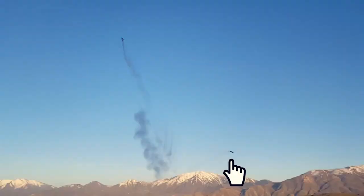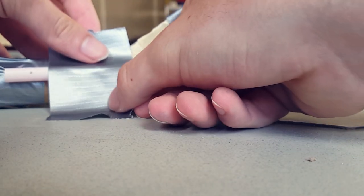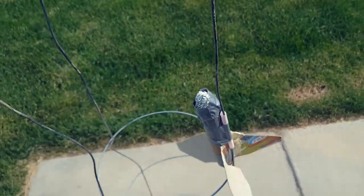Otherwise, it might fly out. Now, all you have to do is tape a straw onto your rocket and slide it onto some sort of launch pad. In our case, we're using a tomato cage.